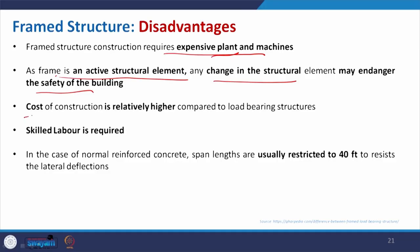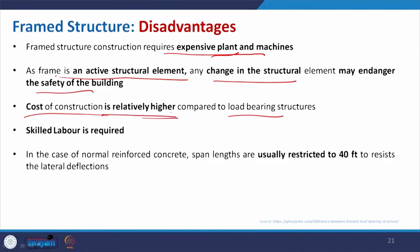That is why — as we all have experienced — post construction whenever we make alterations, we never damage or cut any structural element like the beam and column. The cost of construction is relatively higher compared to the load bearing structure, but again if there is a limitation with the load bearing then effectively when you go for high rise this will not matter. For a low rise structure this will have a higher cost. The skill level is also required to have the proper finishing, and in the case of normal reinforced concrete the span length is usually 40 feet.